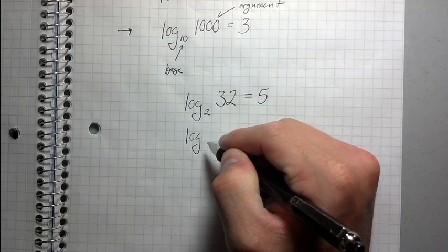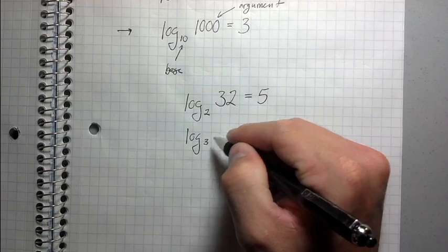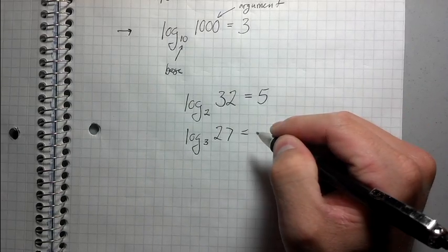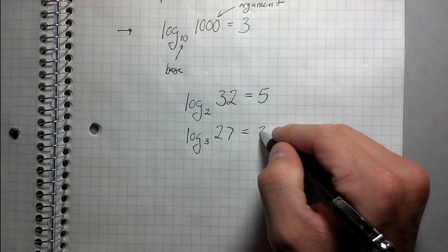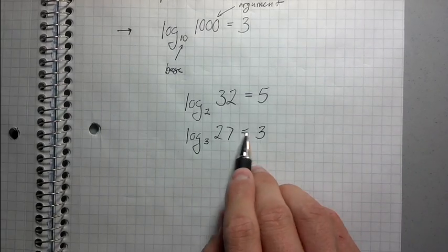How about this? If I have log base 3 of 27, what does this equal? 3 to what power is 27? 3, right? Because 3 cubed is 27.